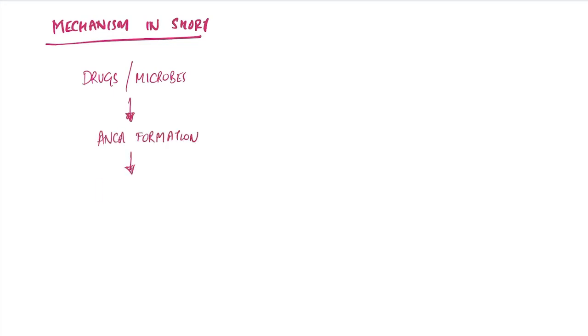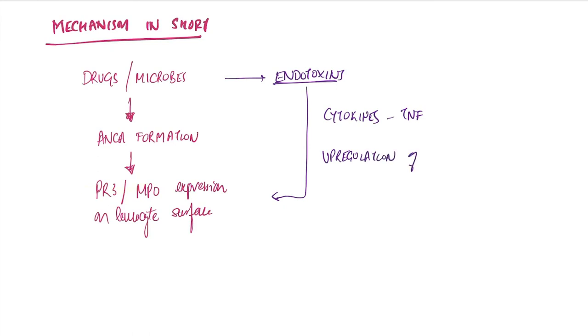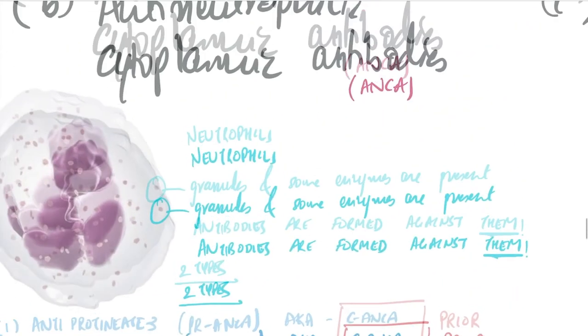Endotoxins released by microbes lead to formation of cytokines, mainly TNF, which causes upregulation of PR3 and MPO. This leads to activation of neutrophils. Activated neutrophils release reactive oxygen species, which in turn causes vasculitis.